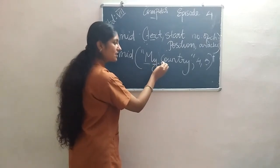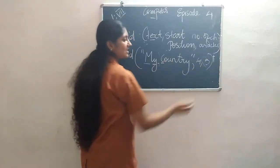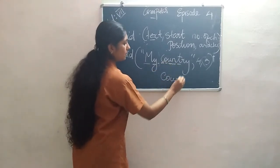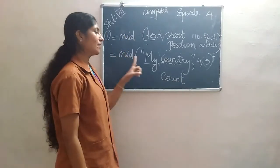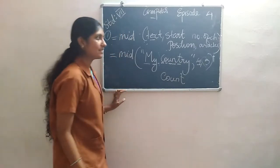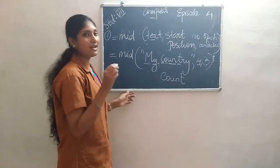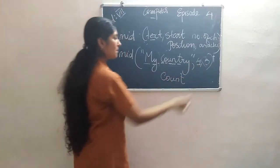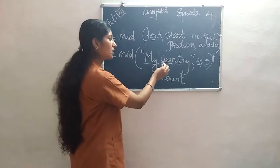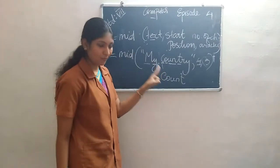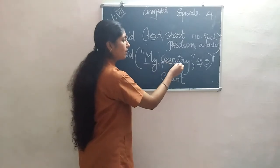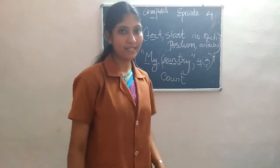Starting from the 4th position 'C', we count 5 characters: 1, 2, 3, 4, 5 — so the output is 'COUNT'. The MID function returns values from the middle of a string. The second argument is the start position (counting from the left), and the third argument is the number of characters to return. So from position 4 for 5 characters, the output is 'COUNT'. These are the text functions.